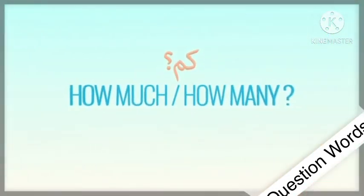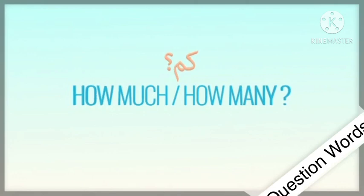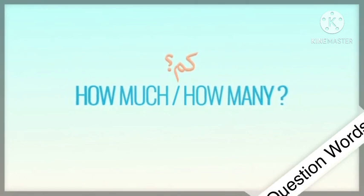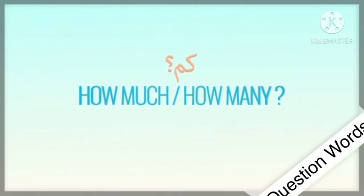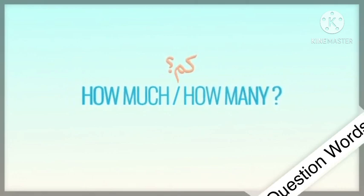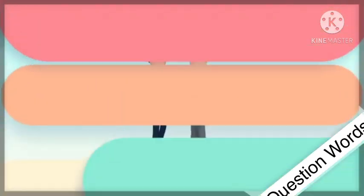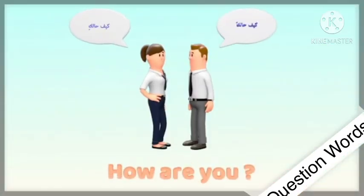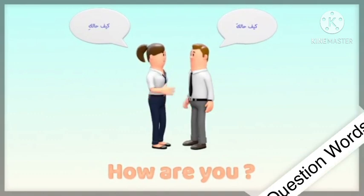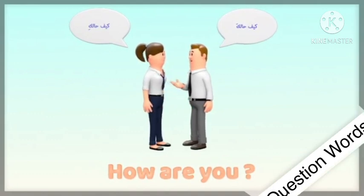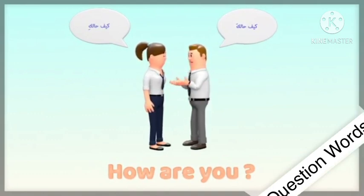The fifth and last question word is 'kaifa,' which means 'how.' There is also 'kam,' which means 'how much' or 'how many.' So there are two types of 'how.' The first type — an example: 'How are you?' which means 'kaifa haluka' in the male form.